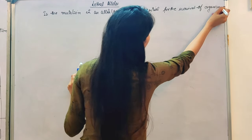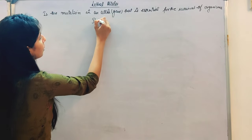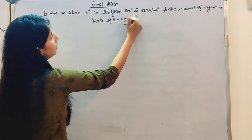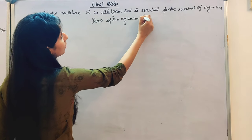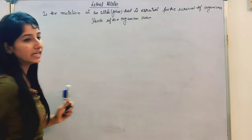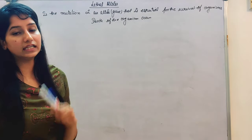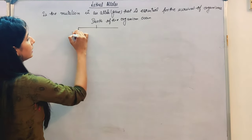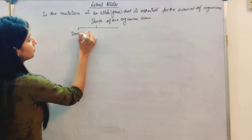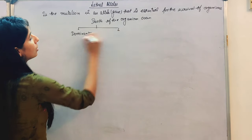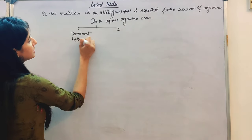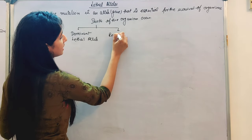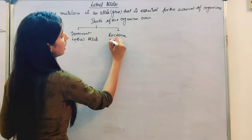Due to a lethal gene, death of the organism occurs. Lethal alleles can be of two types: dominant lethal alleles or recessive lethal alleles.